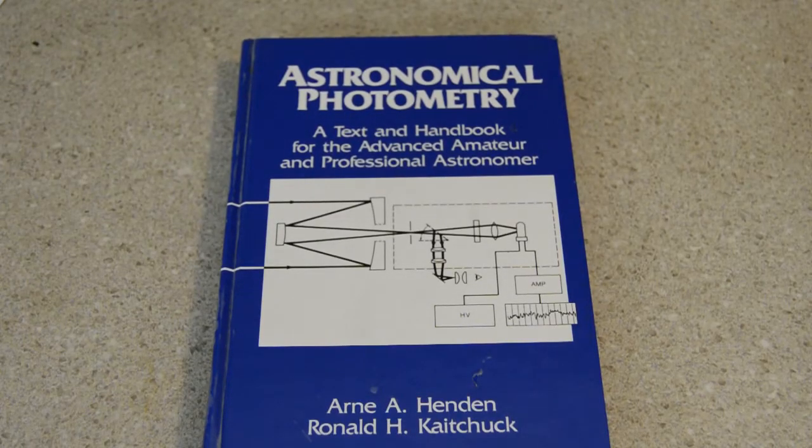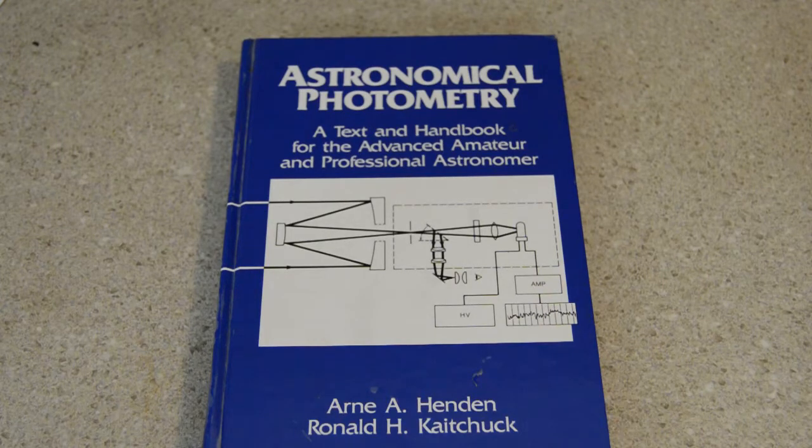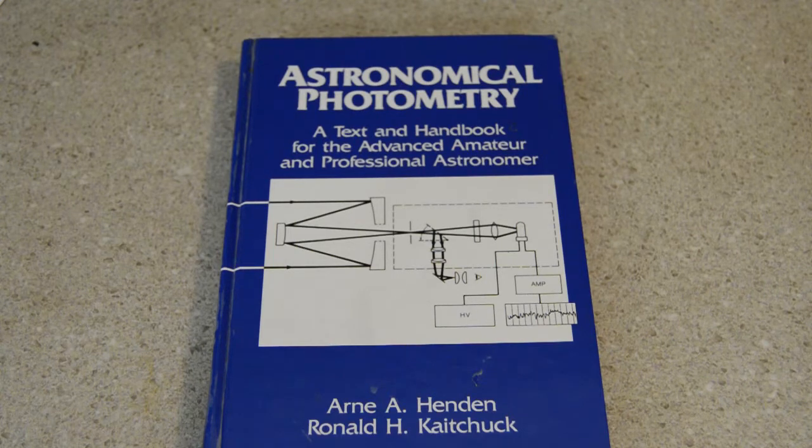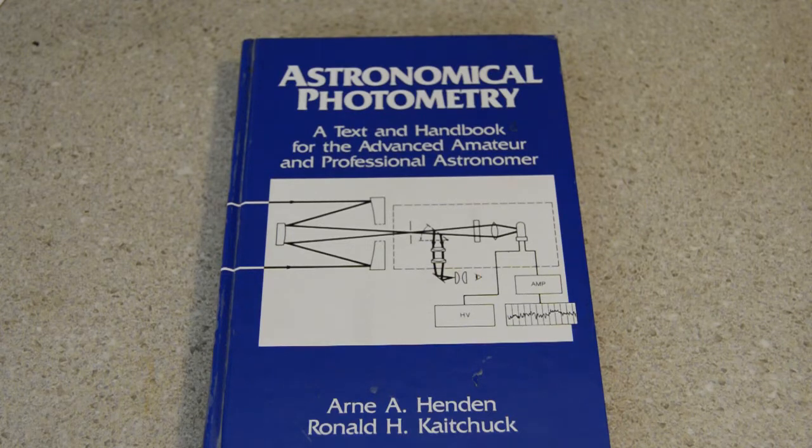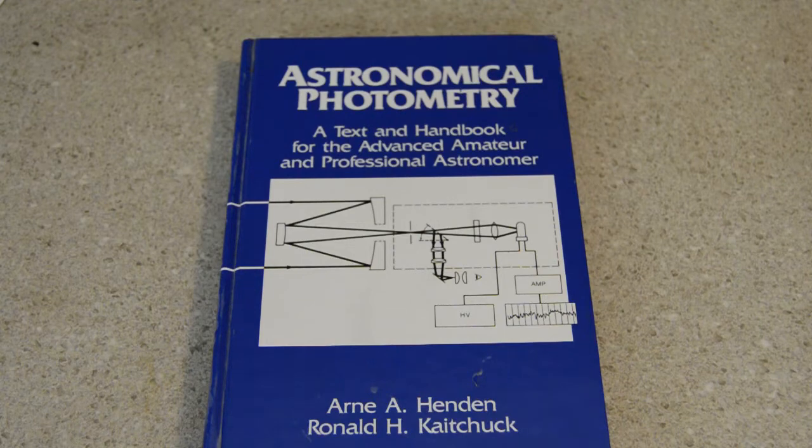Yeah, this book here is the most important book on the matter. If you just follow what this book tells you, you can do anything you want to do with a photon counter or a photometer. There are a few things you have to do before you can get right into it. You have to figure out what are called color transform coefficients for your system. It sounds kind of complicated, but it's not. The reality is you can do photoelectric photometry pretty easily if you just follow just a couple things that are in this book. Maybe get a little advice from the AAVSO.